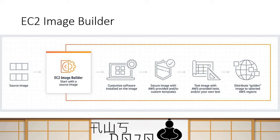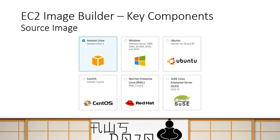So this is how the pipeline works. Let's understand some of the fundamental components involved in pipeline building. The first one is the source image. You can use both public and private images as a source image, and you can use any operating system — Amazon Linux, Windows, Ubuntu, Red Hat, and more. You can select any of these as your source image, and keep in mind you can select both public and private images.